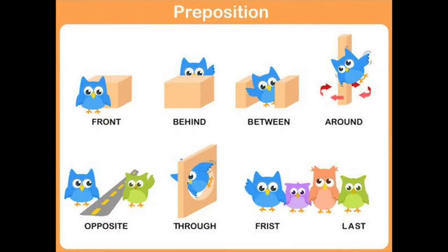Before we start with the topic, look at the picture here. There is a birdie. Where is it? When you look at the position of the bird, sometimes it is in front of the box, it is behind, it is between two, and sometimes it is around. Sometimes it is opposite of somebody else, sometimes it is through or first in the line or last.